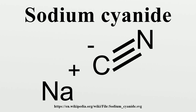When it is treated with acid, it forms the toxic gas hydrogen cyanide: NaCN + H2SO4 → HCN + Na2SO4. Sodium cyanide is produced by treating hydrogen cyanide with sodium hydroxide: HCN + NaOH → NaCN + H2O.